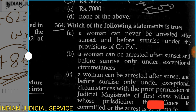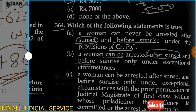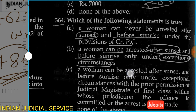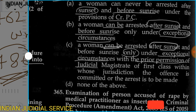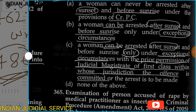Question 364: Which of the following statements is true? Option A: A woman can never be arrested after sunset before sunrise. Option B: A woman can be arrested after sunset and before sunrise only under exceptional circumstances. Option C: A woman can be arrested after sunset and before sunrise only under exceptional circumstances with prior permission of the judicial magistrate of first class within whose jurisdiction the offense is committed or the arrest is to be made. Option D: None of the above. The answer is Option C.